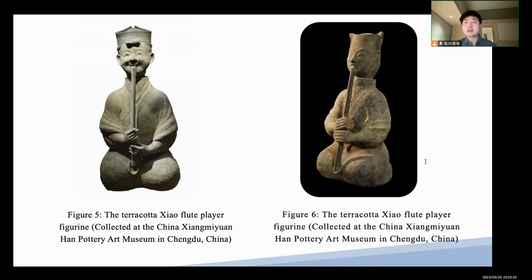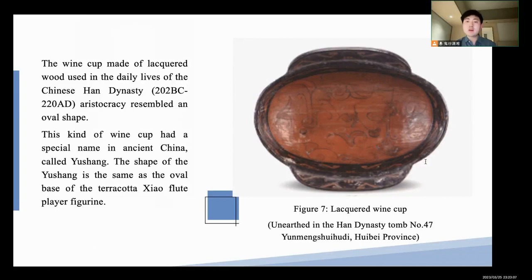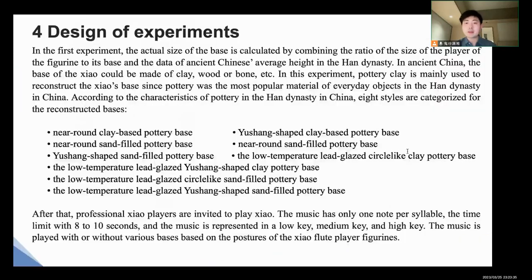Some such direct shell flute player figurines have been unearthed in China, in the middle and lower reaches of the Yangtze River. Here are two pictures, both from the Sichuan basin. The wing cup made of lacquered wood used in the daily lives of the Chinese Han dynasty are preserved and present an oval shape. This kind of wing cup had a special name in ancient China called Yuzang. The shape of Yuzang is the same as the oval base of the direct shell flute player figurine.